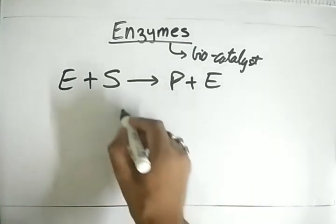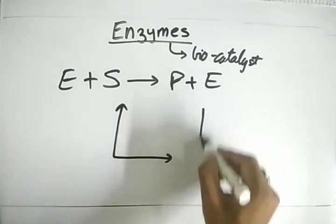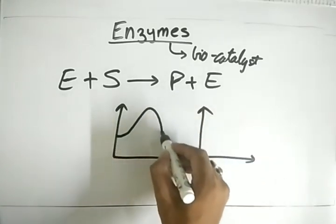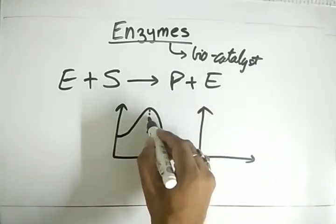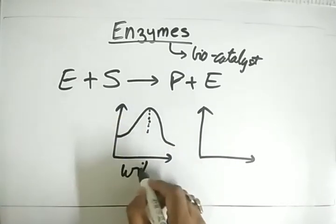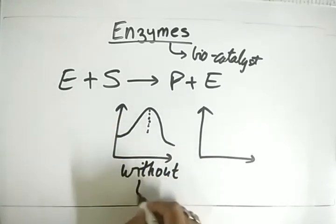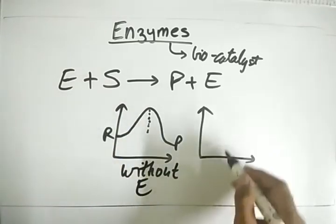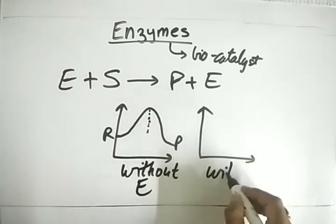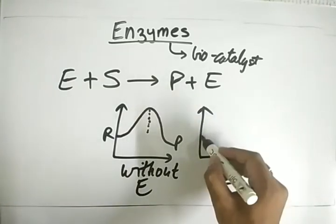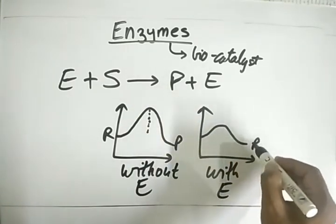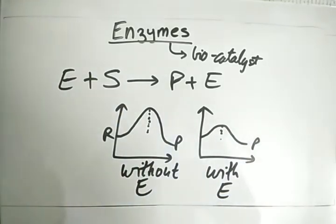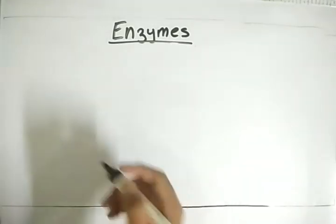Consider a graph of energy: the potential barrier from reactants to products is high without the enzyme. But if we use the enzyme, this barrier decreases, hence taking less effort and less time to get the desired product.